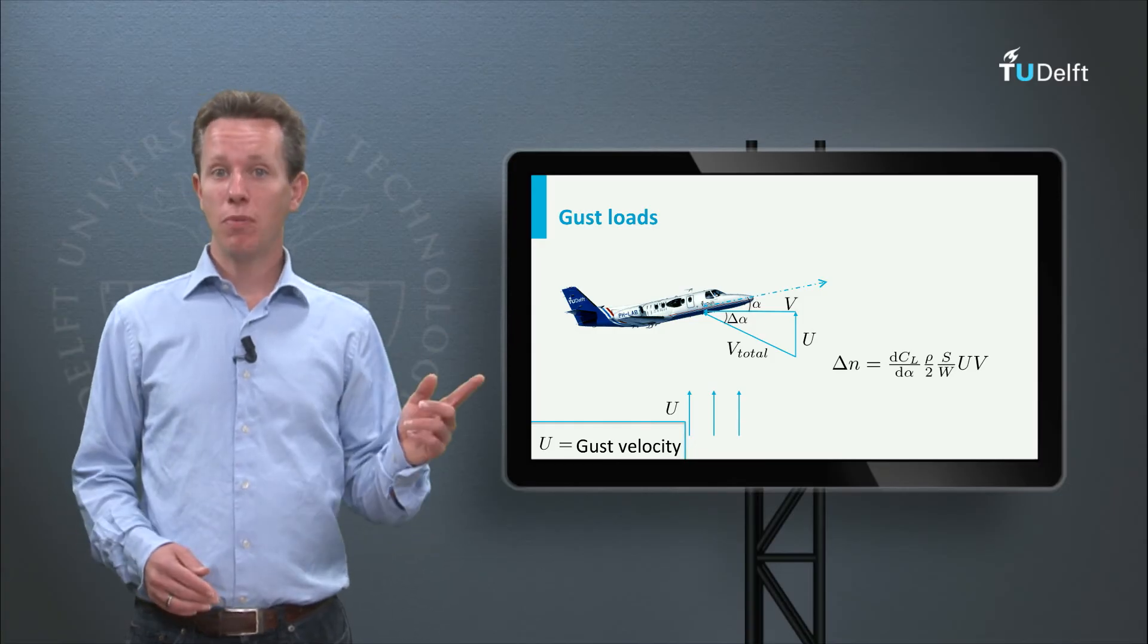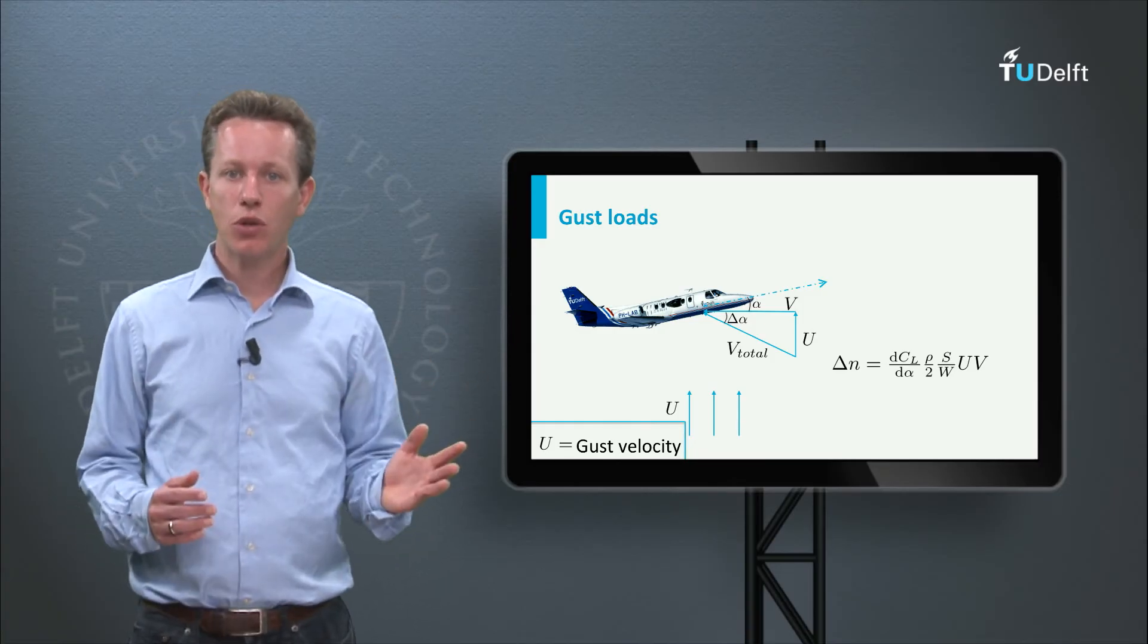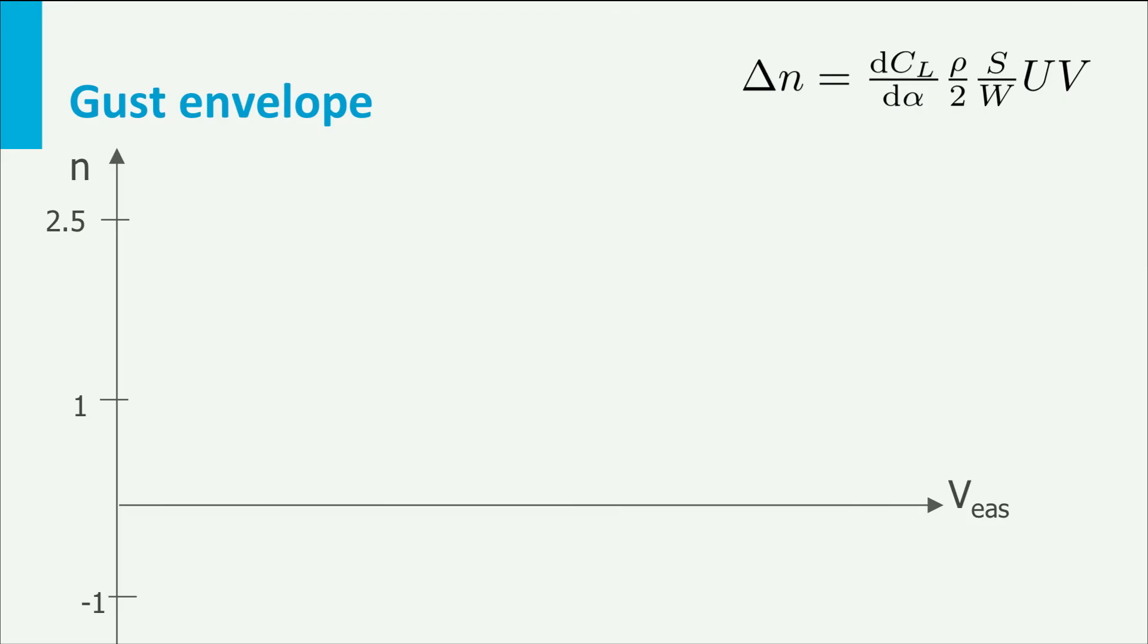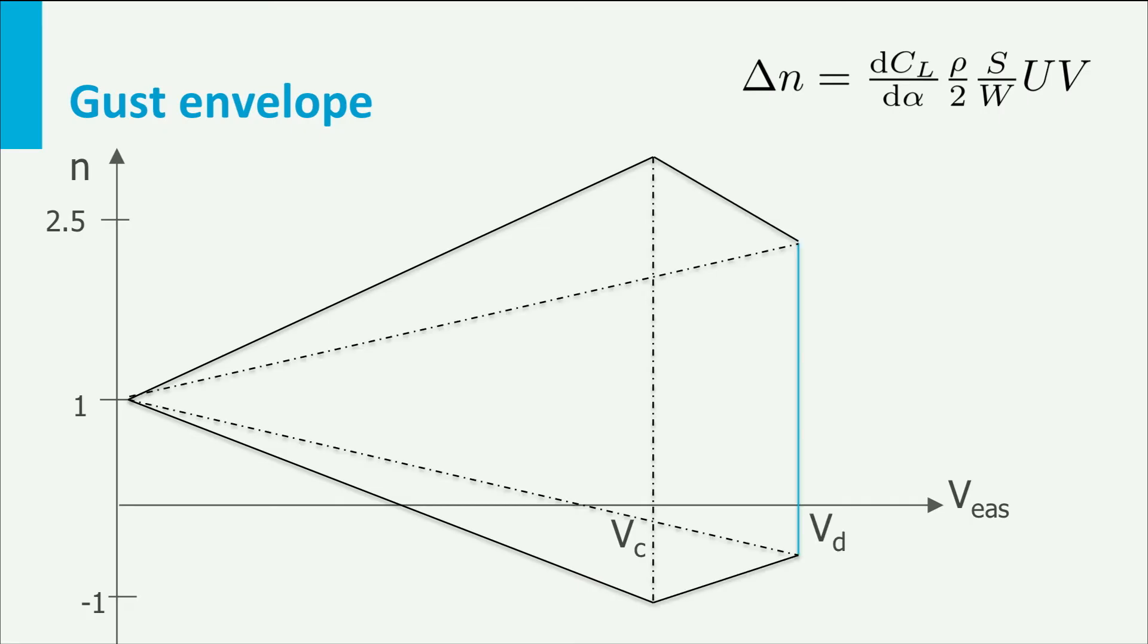Just like the maneuver envelope, we can now make a gust envelope. So let's draw equivalent airspeed versus load factor. The airworthiness specifications have specified the gust to be considered at the design cruise speed and below. For a constant u, the delta n as a result of a gust relative to the condition where the load factor equals 1 becomes a straight line. At VC the resulting gust load is maximum. Similarly, the airworthiness authorities have specified a gust with a lower magnitude to be considered for the design dive speed. Again, we can draw a line from the origin. Now we have a complete gust envelope.